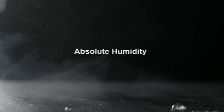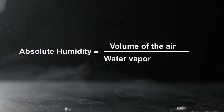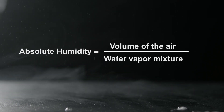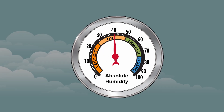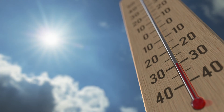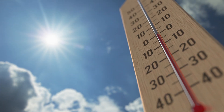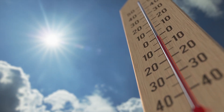Absolute humidity is the measure of the total mass of water vapor in a given volume of air. Mathematically, absolute humidity can be calculated by dividing the volume of the air and water vapor mixture. However, the calculation of absolute humidity does not account for the temperature of the system. The value of absolute humidity is affected by changes in the air temperature or pressure changes.